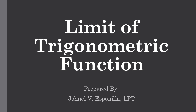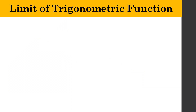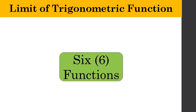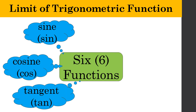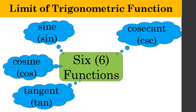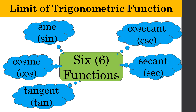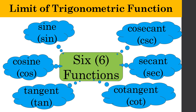This is the limit of trigonometric function. There are six important functions that you can see when we are solving the limit of trigonometric functions. We have sine, cosine, tangent, and the reciprocal functions which are cosecant, secant, and cotangent respectively. These functions refer to the ratio of any two sides of a right triangle with respect to a reference angle — that is your trigonometric function.